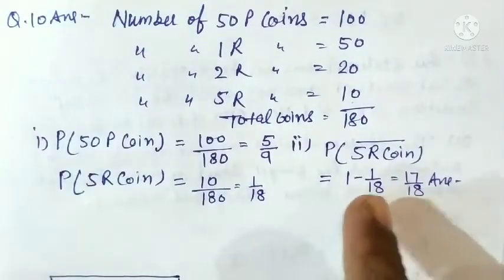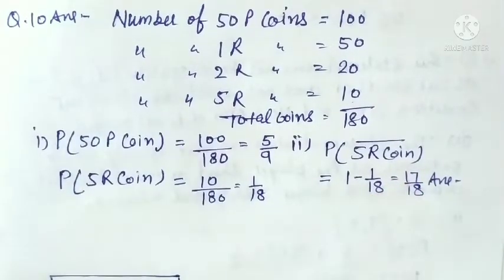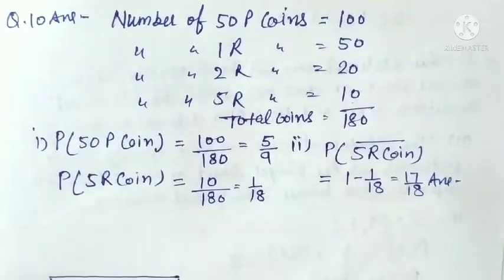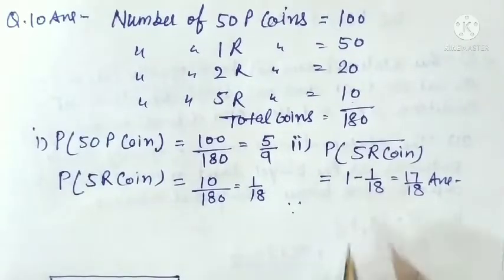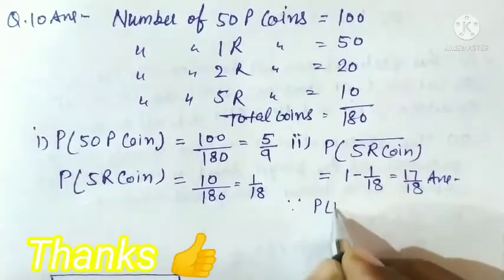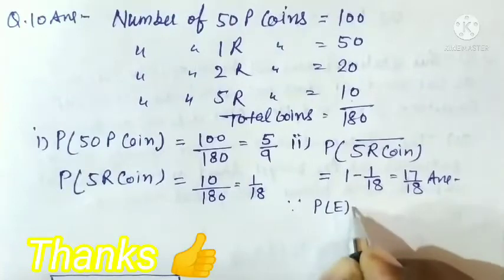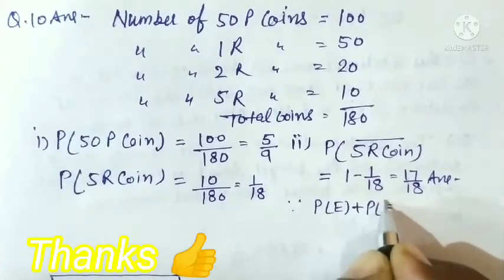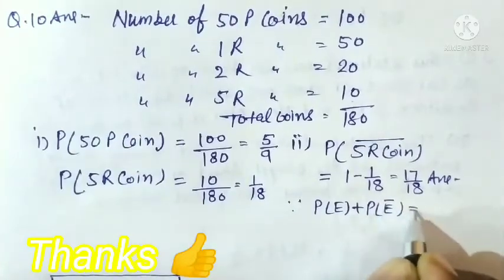So P(not 5 rupee coin) = 17/18, because we know P(E) + P(not E) = 1.